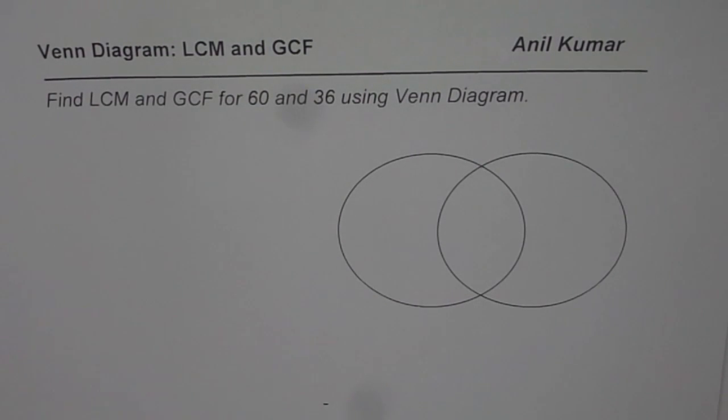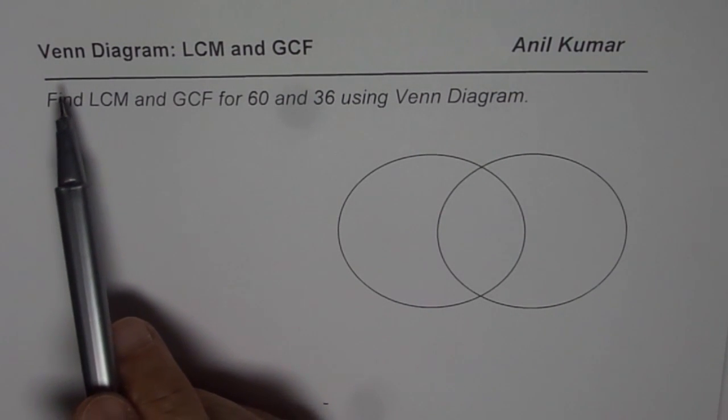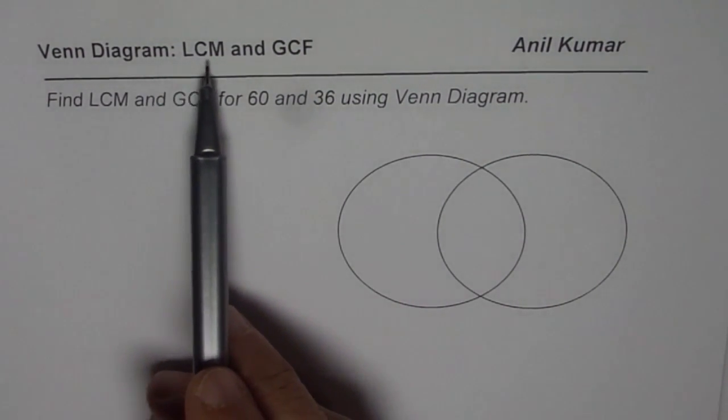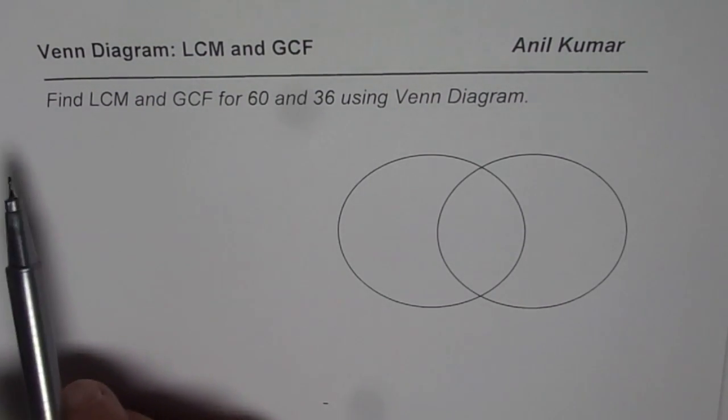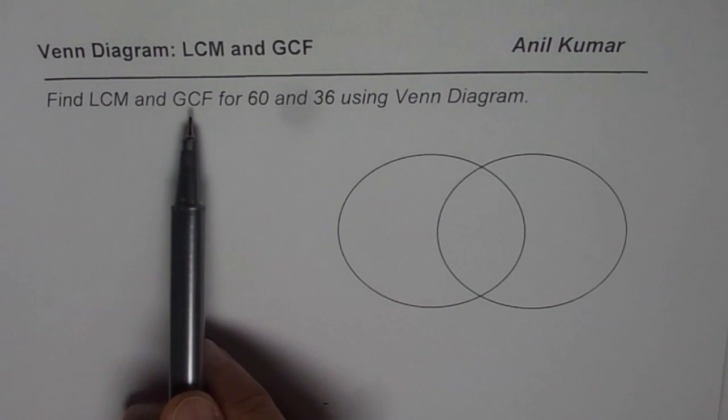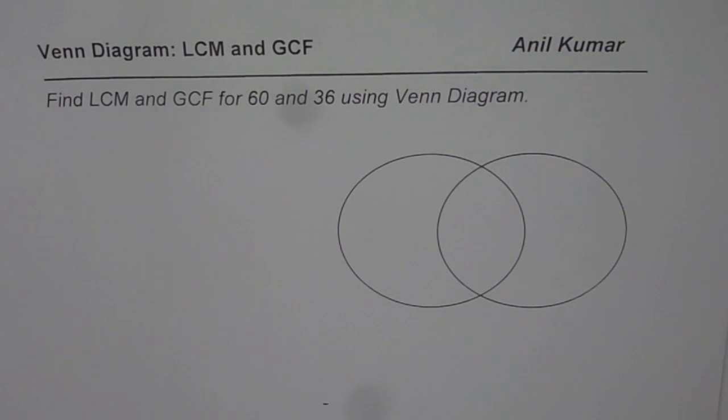I am Anil Kumar and here is a practice question for you. You need to apply the techniques learned in using Venn Diagram to find lowest common multiple and greatest common factor. The question is find LCM and GCF for 60 and 36 using Venn Diagram. You can pause the video, answer, and then look into my suggestion.